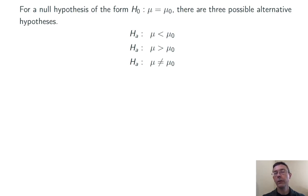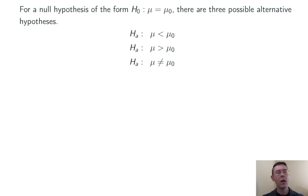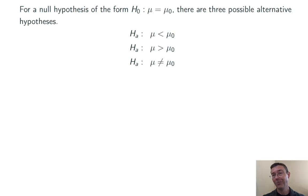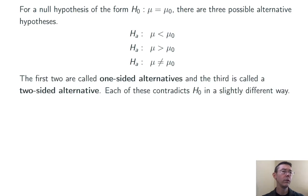So let's get into the alternative hypothesis in a little bit more depth. I said that the alternative hypothesis was chosen just to contradict the null hypothesis. But even for a simple null hypothesis, mu equals mu0 — where mu0 is just some hypothesized value — there are three possible alternative hypotheses. First, that the population mean mu is less than that hypothesized value. Second, that it's greater. And third, that it's not equal to mu0. The first two of these are called one-sided alternatives, for obvious reasons. And the third is called the two-sided alternative hypothesis.